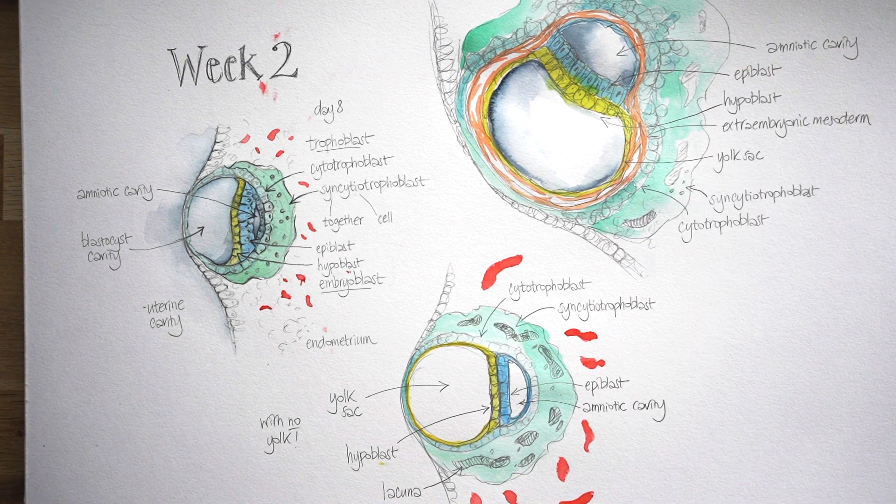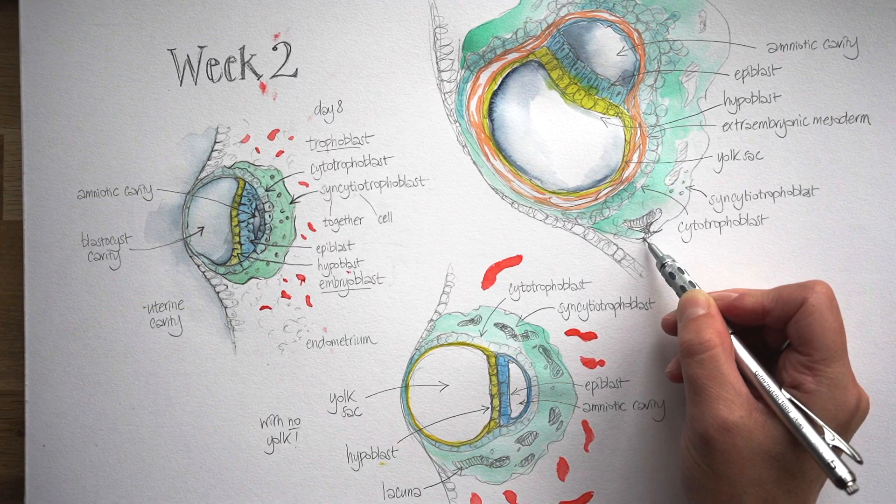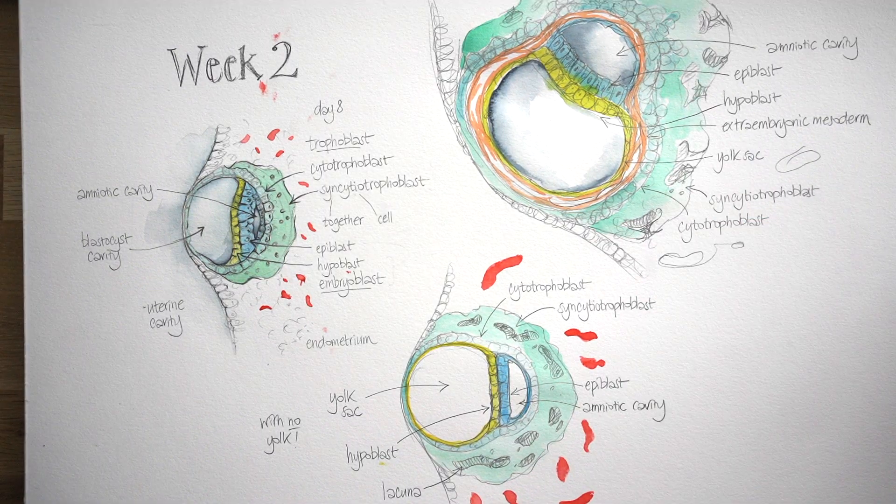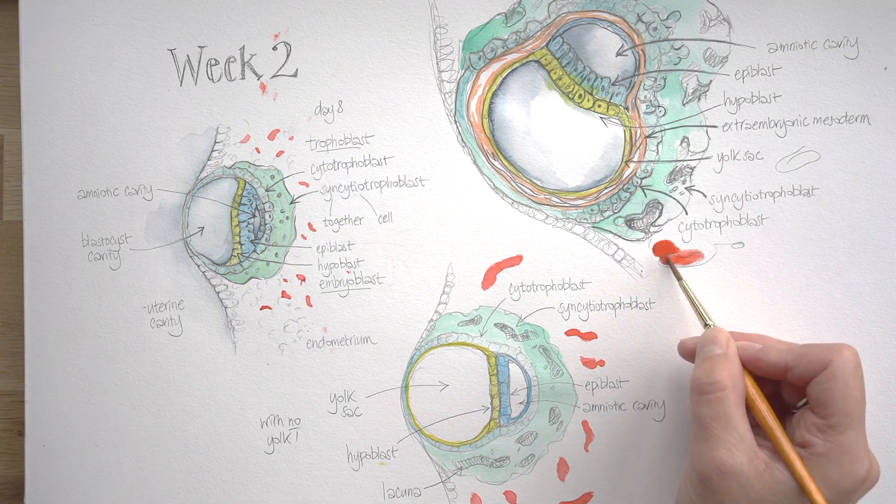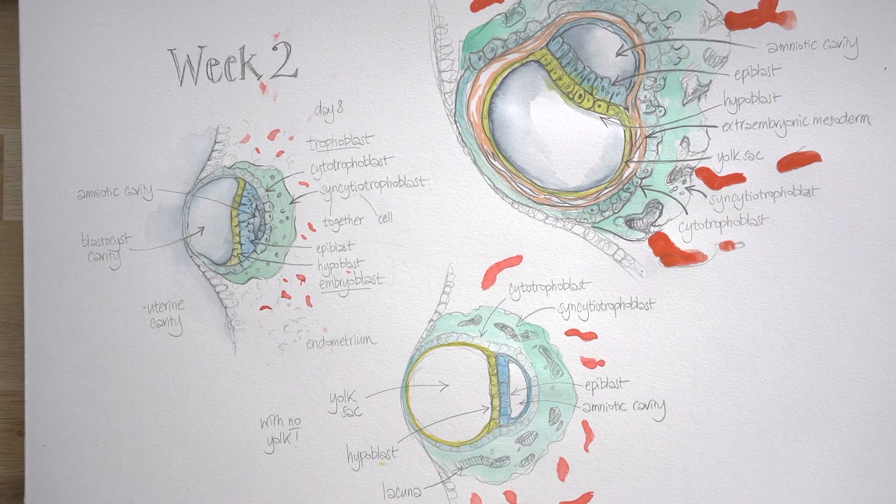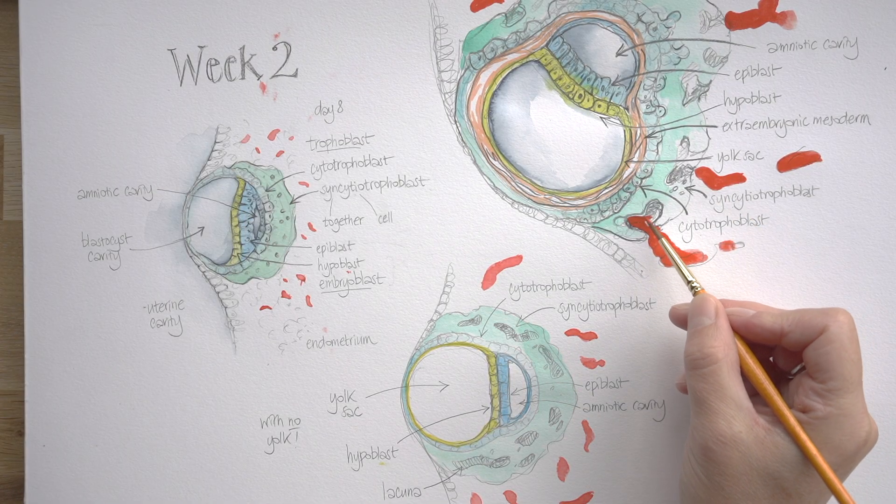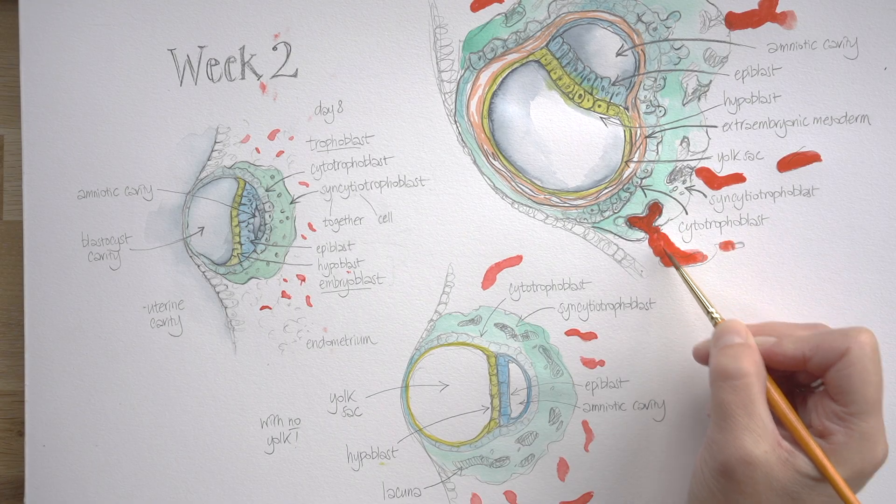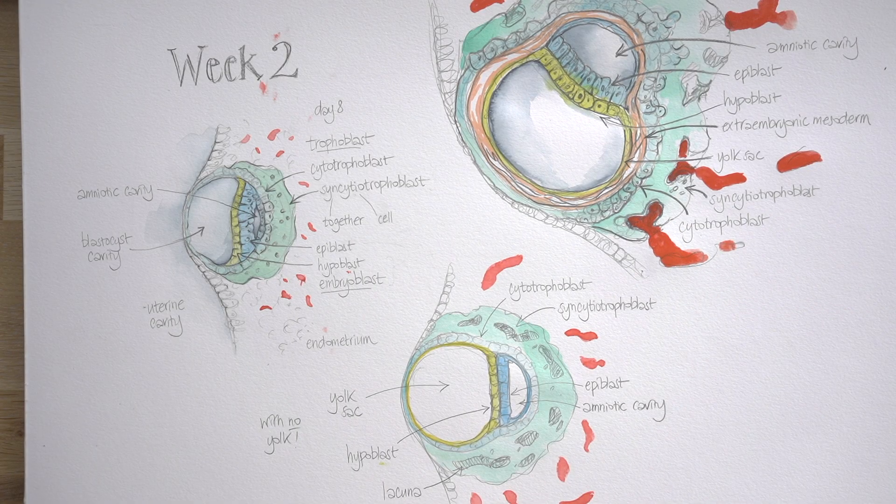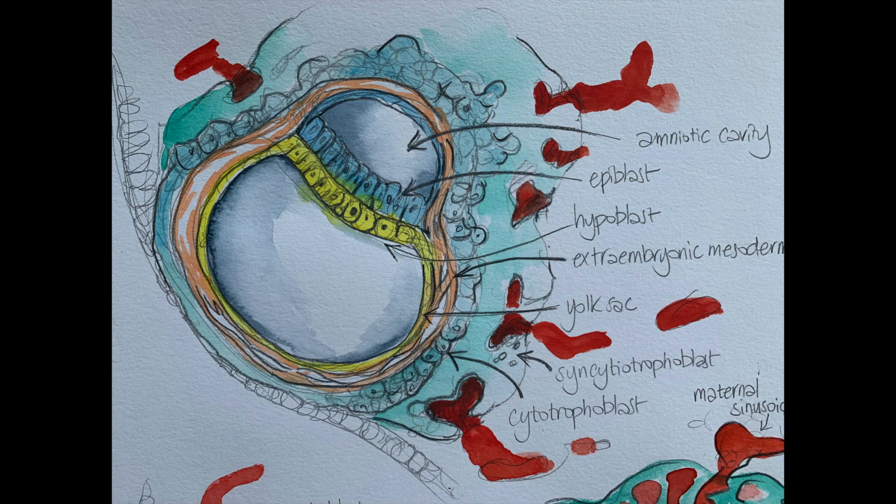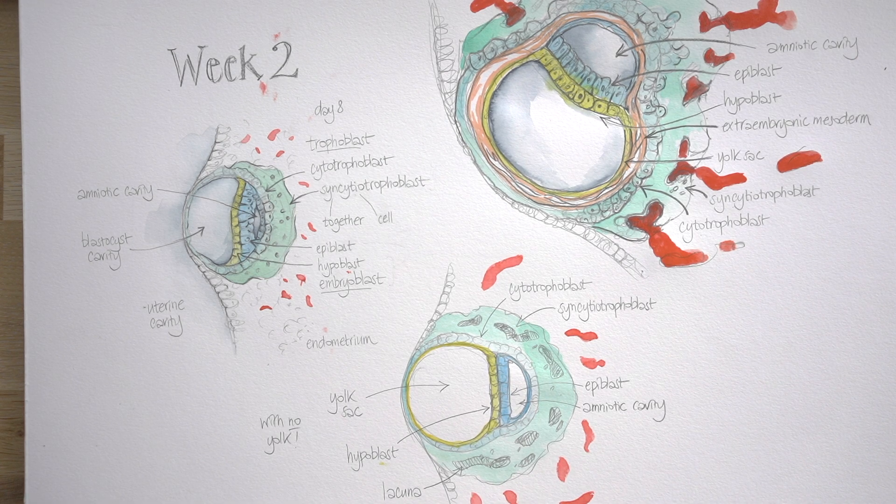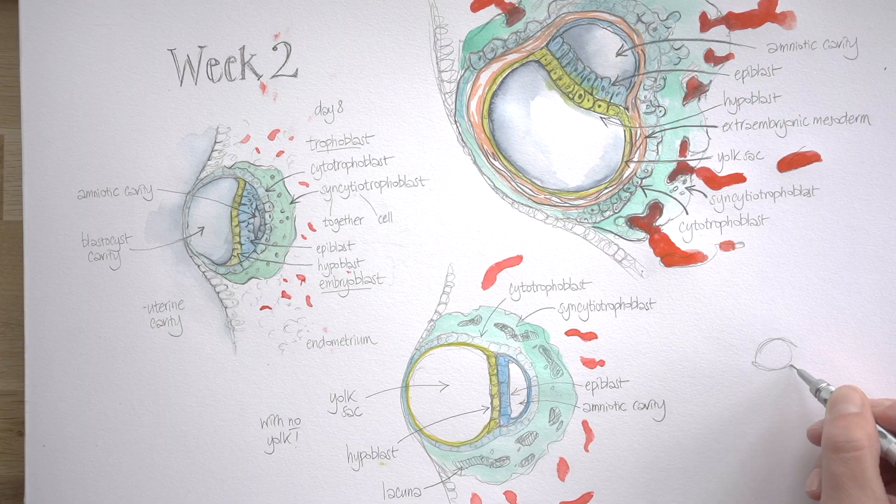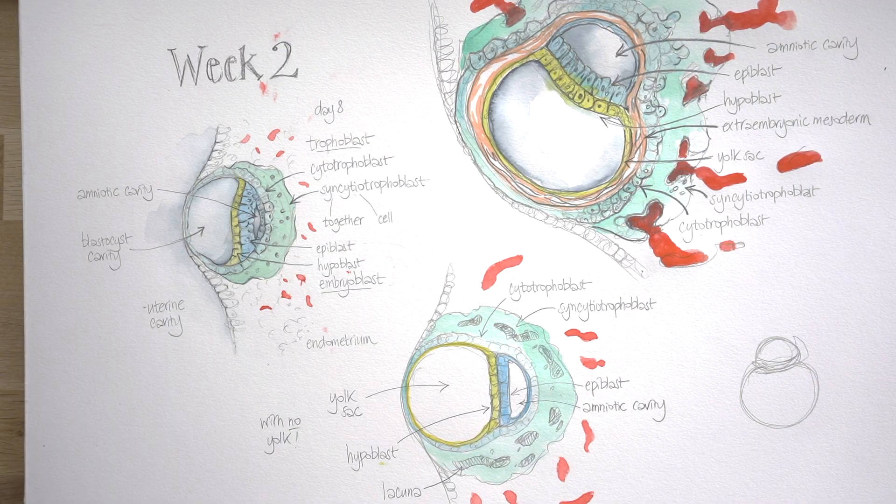Now let's have a look at what's going on with that syncytiotrophoblast and these big spaces, these lacunae, which are opening up in it. They're becoming larger and larger and opening up right to the edge of the syncytiotrophoblast. At the same time, the maternal capillaries have swollen into sinusoids. And look, the blood from the maternal capillaries is starting to enter the lacunae of the syncytiotrophoblast. So this is the origins of a uteroplacental circulation. The mother's blood is flowing into embryonic tissues at this point, just 11 or 12 days after fertilisation.